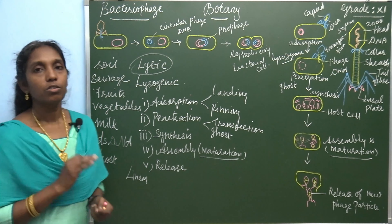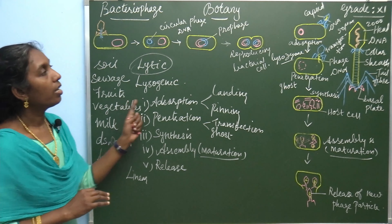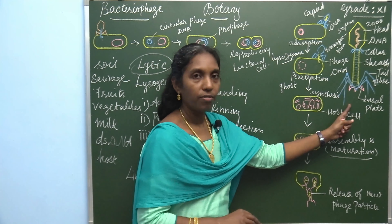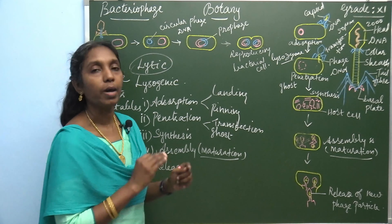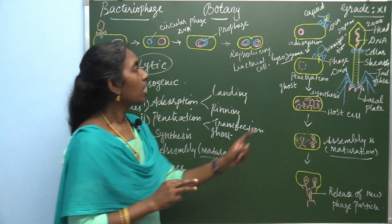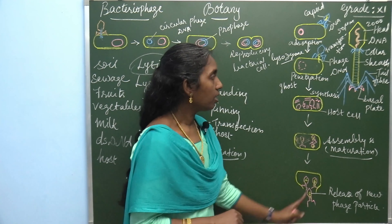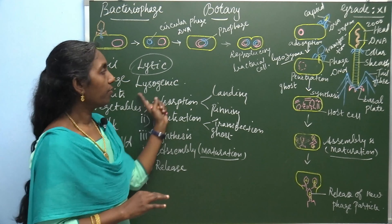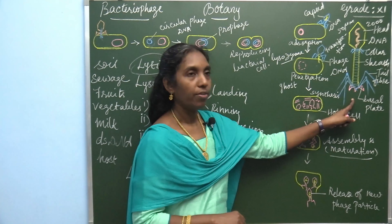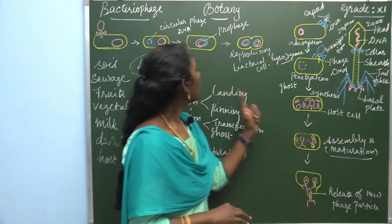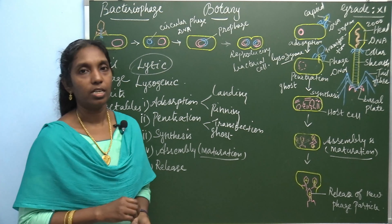So today, the questions you have to learn are: define bacteriophage, the structure of T4 bacteriophage — draw this diagram — and the life cycle of bacteriophage with its two types: lytic cycle and lysogenic cycle. Structure of T4 bacteriophage is a five-mark question, and define bacteriophage is also a question. Learn everything. Thank you.